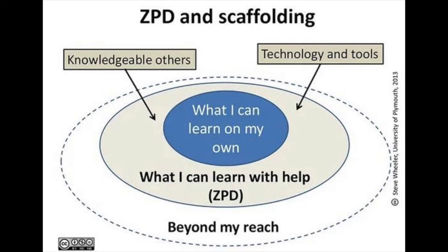The potential level of development can be reached under a more knowledgeable person's assistance or through peer collaboration. A learner's ZPD can be fulfilled through the use of scaffolding. Scaffolding is a temporary support system that should adjust to the needs of the student with the intention of promoting a deeper level of learning. The support provided is gradually removed as the learner becomes more proficient. Thank you very much.